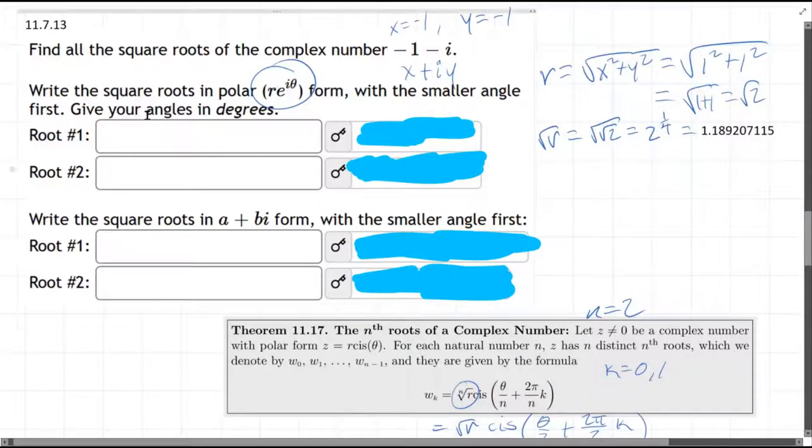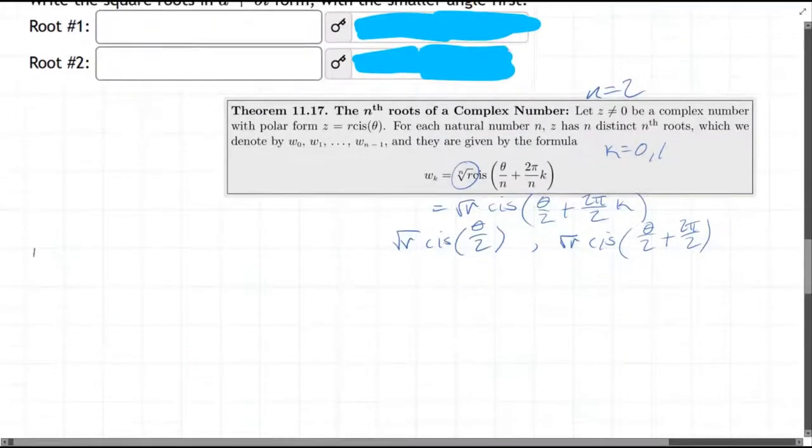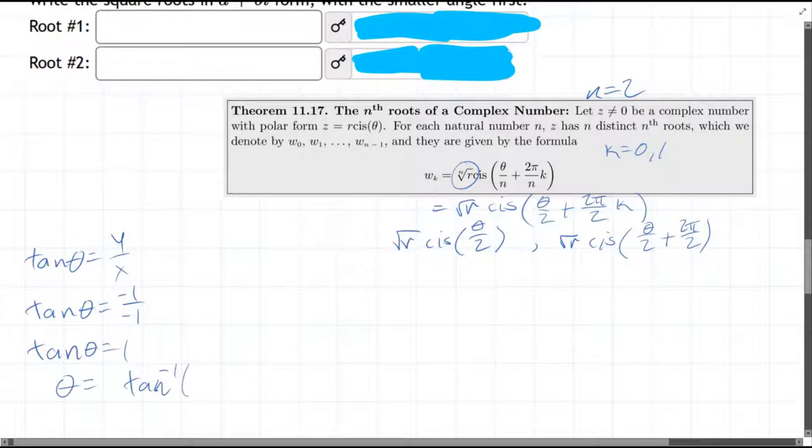Now we need to get theta. So we know tangent theta is y over x. So our x and y are both negative one, and that reduces to one. And to find theta, you use tangent inverse. But we have a slight problem here. If you remember back to the inverse trig functions, the range of tangent inverse is quadrant one or four. Our point has both x and y negative, so our point is in quadrant three.